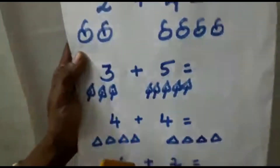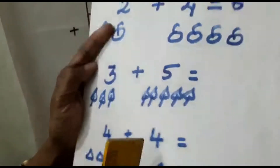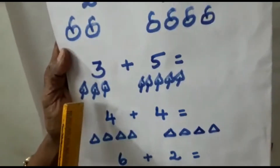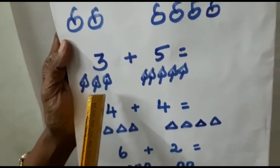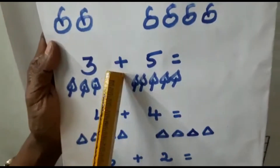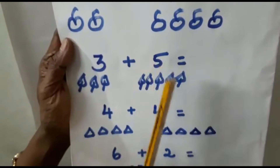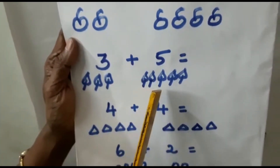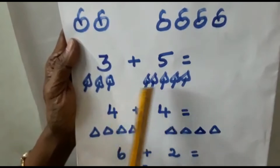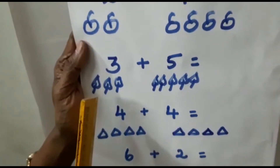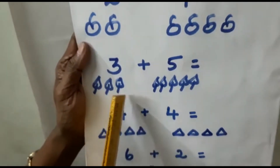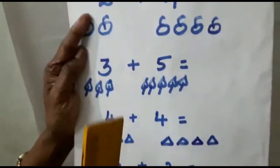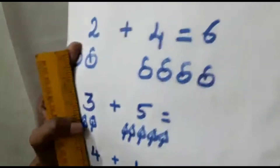Now here we can see how many leaves. You can see 3 leaves. 1, 2, 3, 4, 5, 6, 7, 8. How many leaves are there? 8.